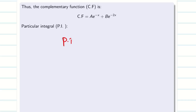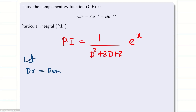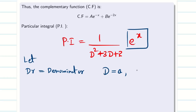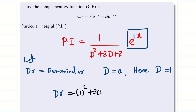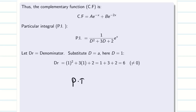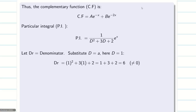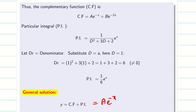Next, find PI. We write PI = 1/(D² + 3D + 2) · e^x. Let DR denote the denominator. Since RHS is e^(ax) with a = 1, replace D by 1: DR = 1² + 3(1) + 2 = 6. This is not equal to zero, so PI = (1/6)e^x. Therefore the general solution is y = Ae^(−x) + Be^(−2x) + (1/6)e^x.